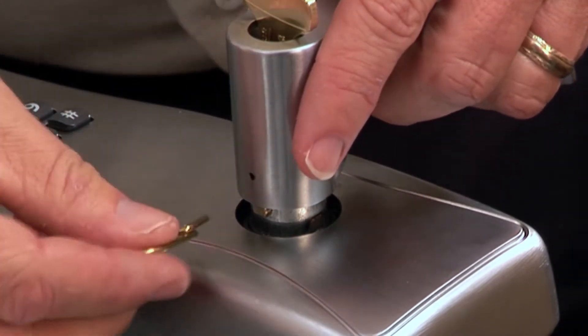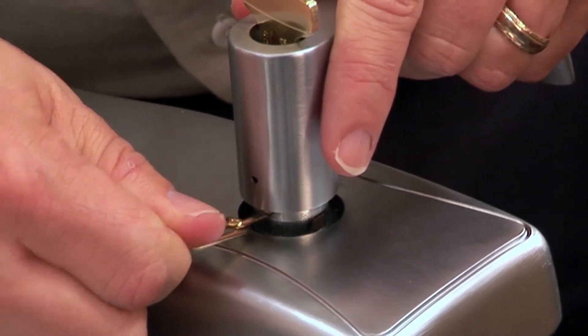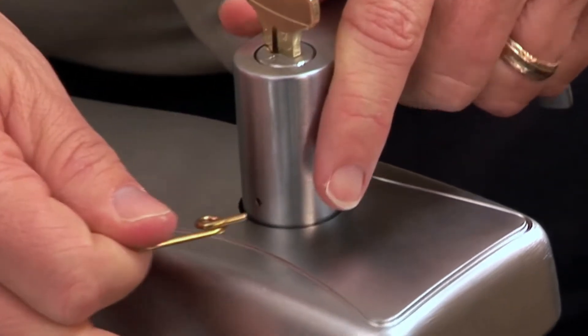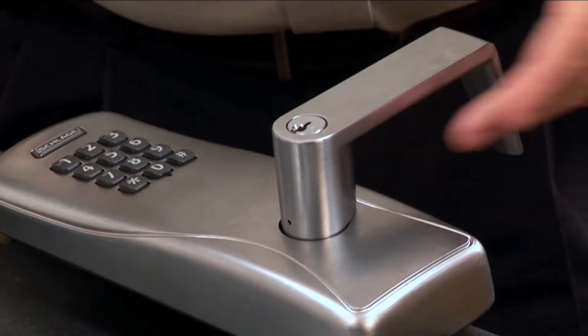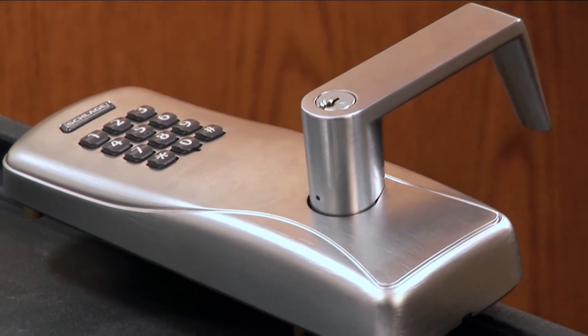Turn the key 90 degrees clockwise and push the lever over the spindle. Depress the knob stop pin using the lever removal tool and continue pushing the lever on until you hear a click. Check that the lever and cylinder have seated correctly by turning the key and removing it from the cylinder.